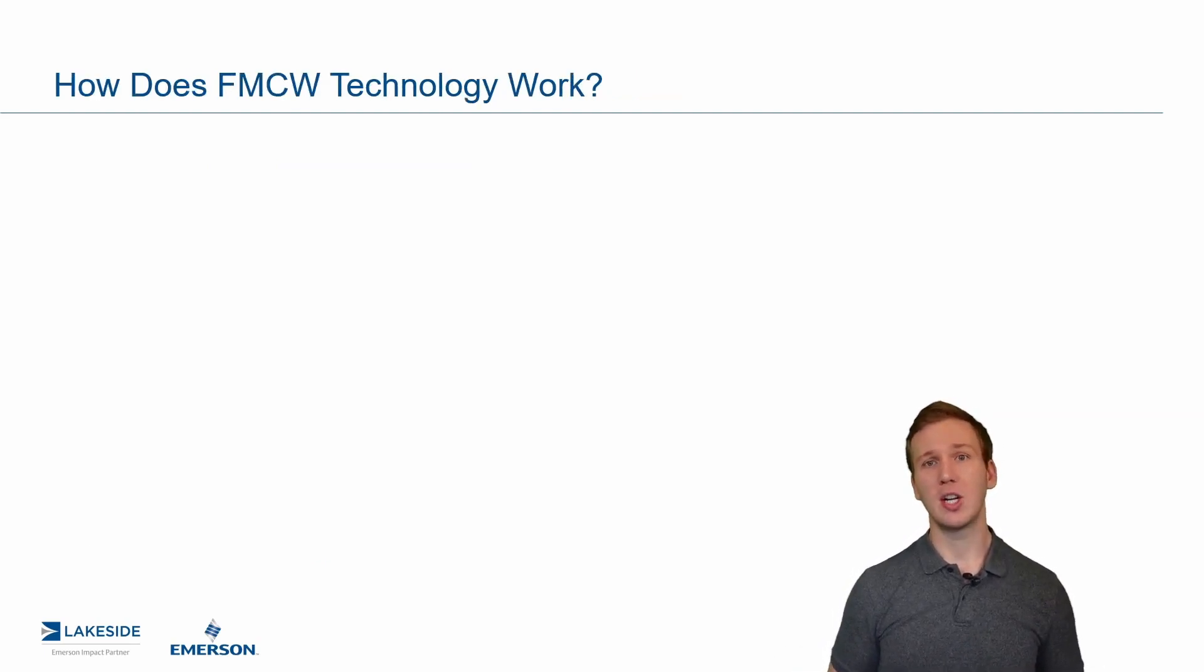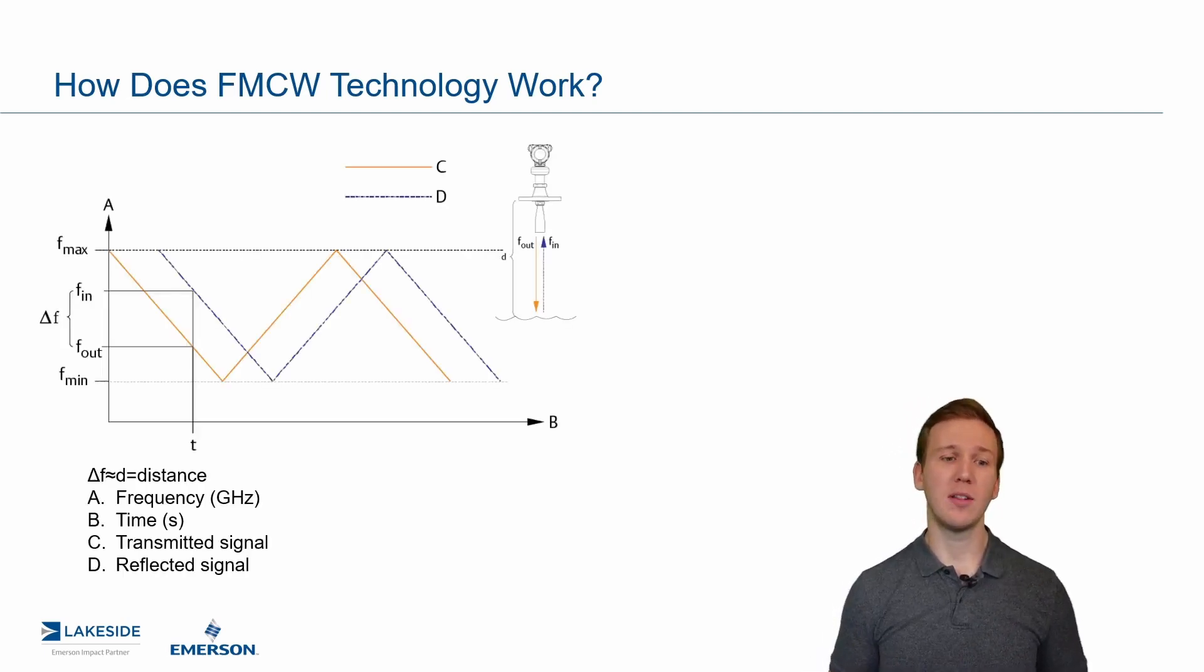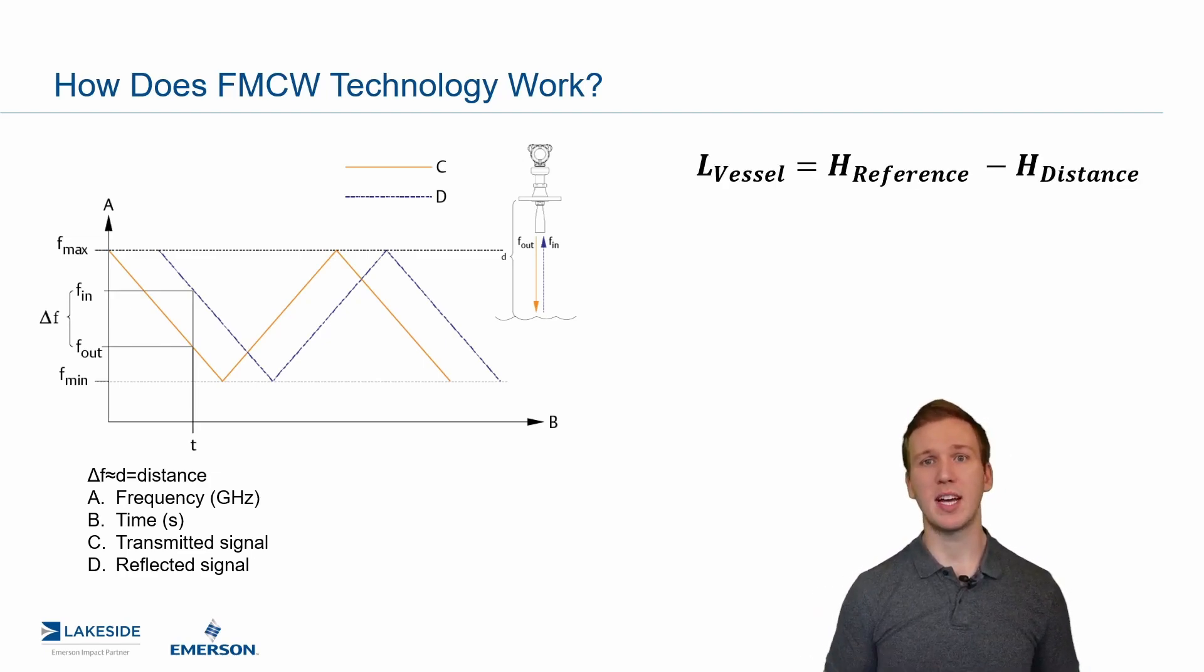Now, we actually look at something slightly different. Instead of measuring how long it takes, we look at something called the phase shift difference. We look at the frequency as it's emitted versus when it's received. We look at the distance between these two wavelengths. This phase shift is directly proportional to how far the product is away. We still have to now reference that same reference height in the vessel and subtract that away, but now it's not based off of a time-of-flight measurement.